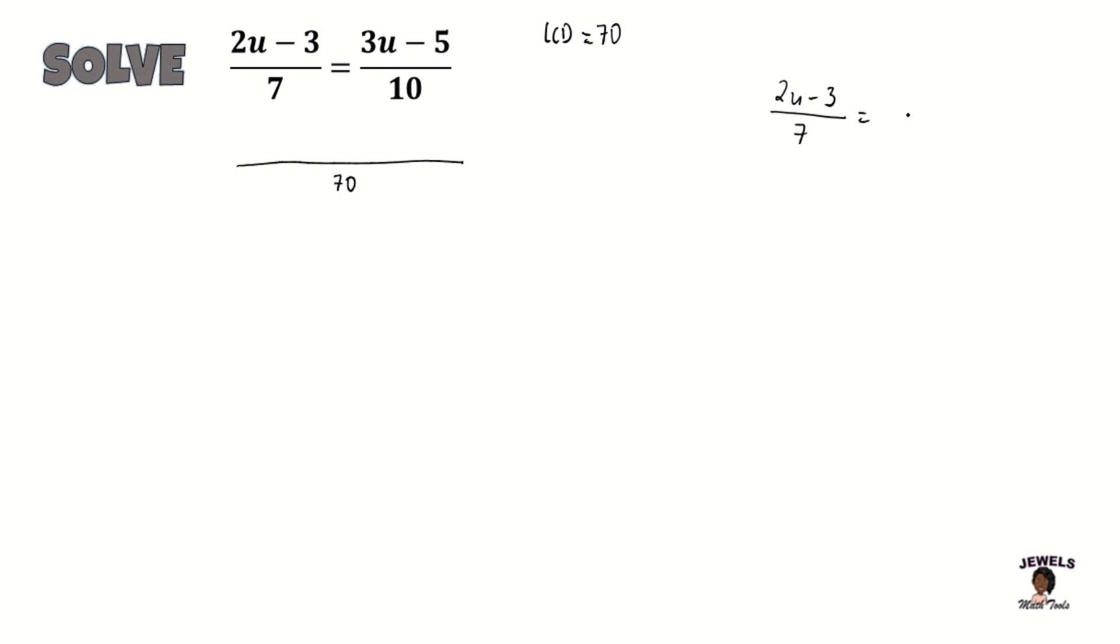Remember that we're changing this to its equivalent form where it has a denominator of 70. We're looking for a number that when we multiply it to 7 it's going to give us 70.